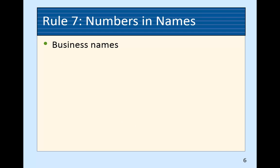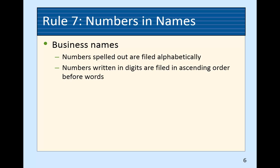Numbers in names — this will be an interesting one. If you have a business name, this is at the bottom of page 70 and onto page 71. There are 11 bullets for this rule. If a number is spelled out — like O-N-E — you file it alphabetically, so 'one' comes after N and before P. However, if it's written as a digit, the number 1 goes in numerical order in front of all the alphabet.